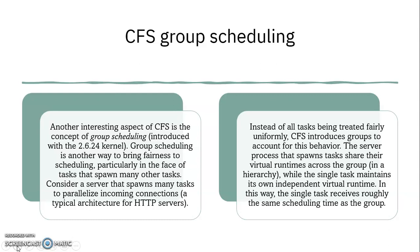Another interesting aspect of CFS is the concept of group scheduling, introduced with kernel 2.6.24. Group scheduling is another way to bring fairness to scheduling, particularly in the face of tasks that spawn many other tasks — consider a server that spawns many tasks for HTTP servers. Instead of all tasks being treated uniformly, CFS introduces groups to account for this behavior. The server process and its spawned tasks share virtual runtimes across the group hierarchy, while a single independent task maintains its own virtual runtime — ensuring the single task receives the same scheduling time as the group.